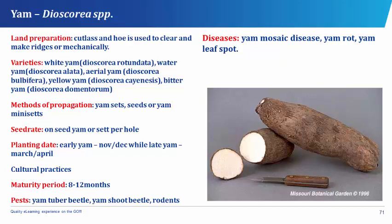The pests that attack yam are the yam tuber beetle, the yam shoot beetle, and rodents. While diseases suffered by yam are the yam mosaic disease, the yam rot, and the yam leaf spot.